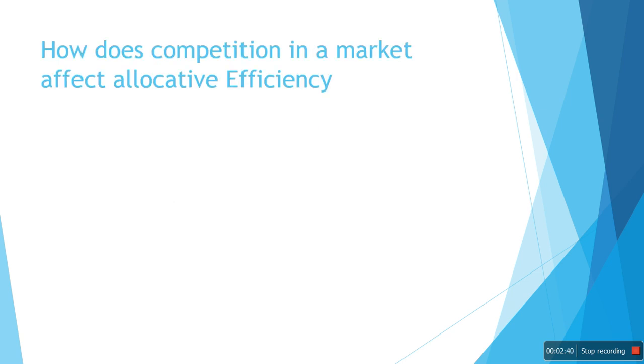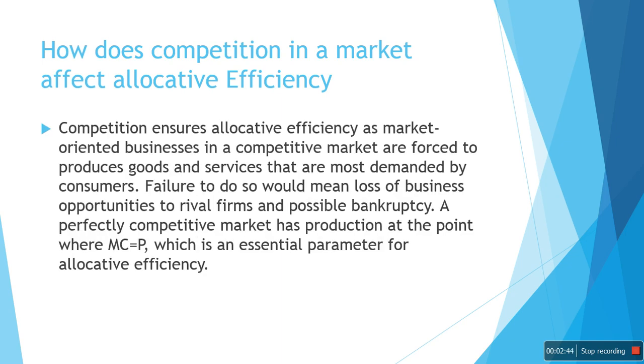How does competition in a market affect allocative efficiency? Competition ensures allocative efficiency as market-oriented businesses in a competitive market are forced to produce goods and services that are most demanded by consumers. Failure to do so would mean loss of business opportunities to rival firms and possible bankruptcy. A perfectly competitive market has production at the point where MC is equal to P, which is an essential parameter for allocative efficiency.